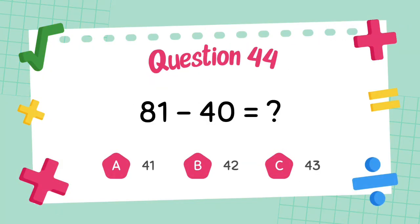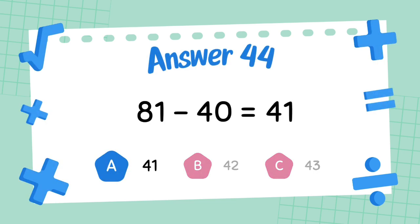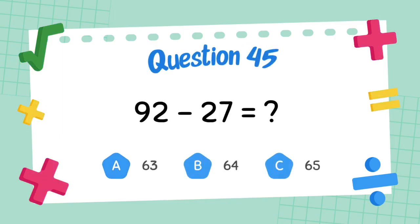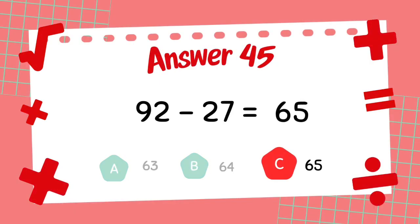What is 81 minus 40? The answer is 41. What is 92 minus 27? The answer is 65.